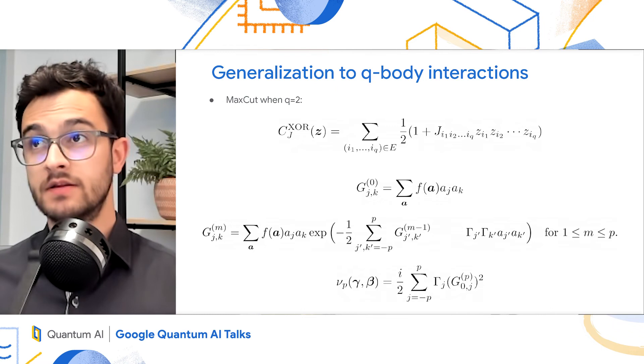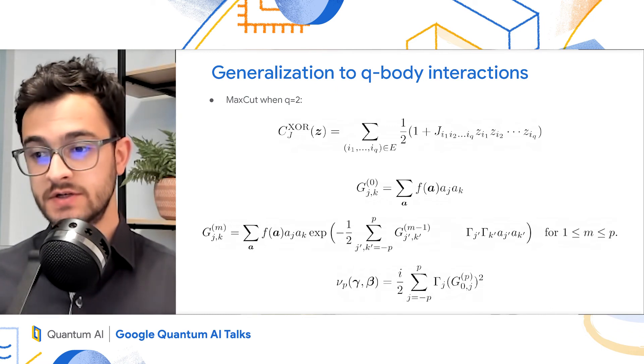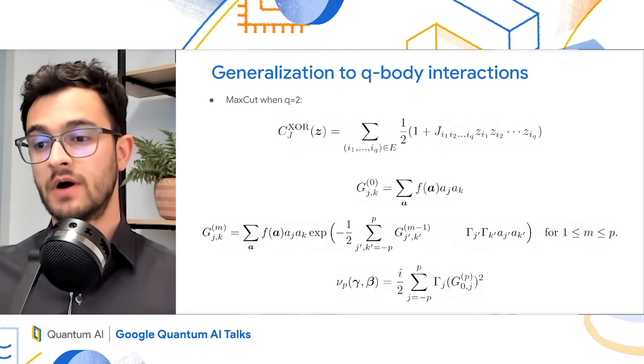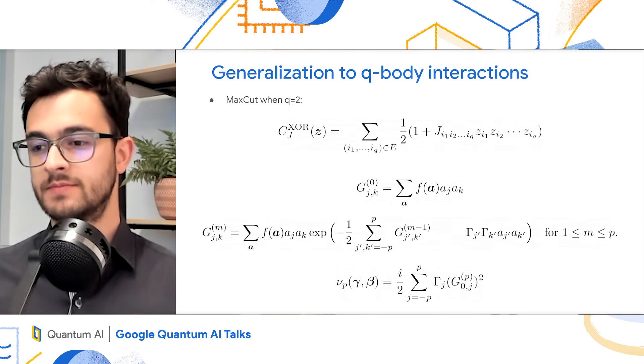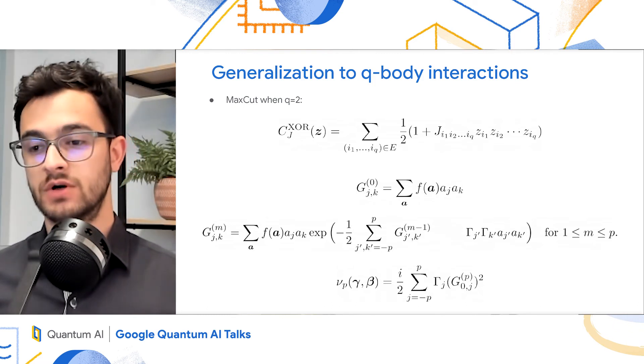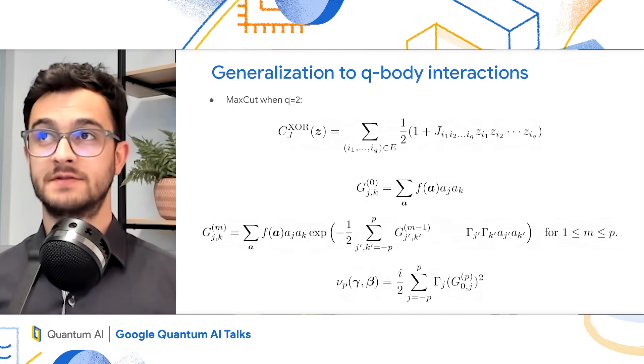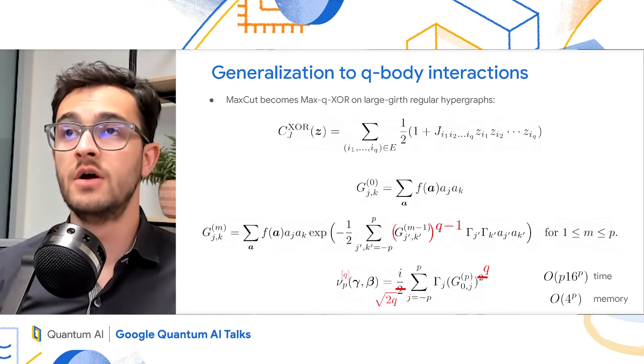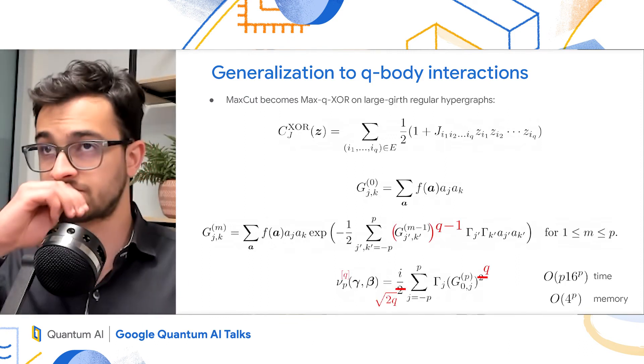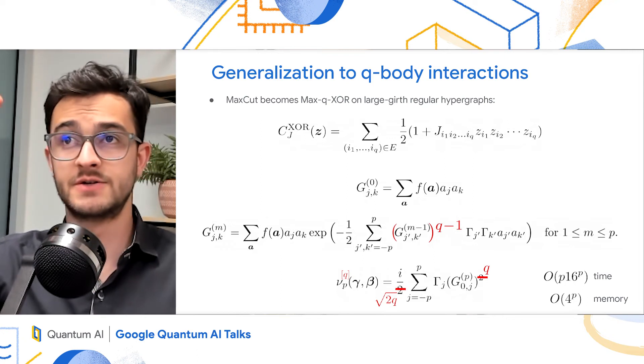So you can see again, the other equation shows the iteration that I already showed before. And I'm going to show you how to tweak this iteration to calculate the performance now for Max-Q-XOR on large-girth regular hypergraphs. And here's what it looks like. All we have to do is to raise, in the second equation, the matrix elements to q minus 1.